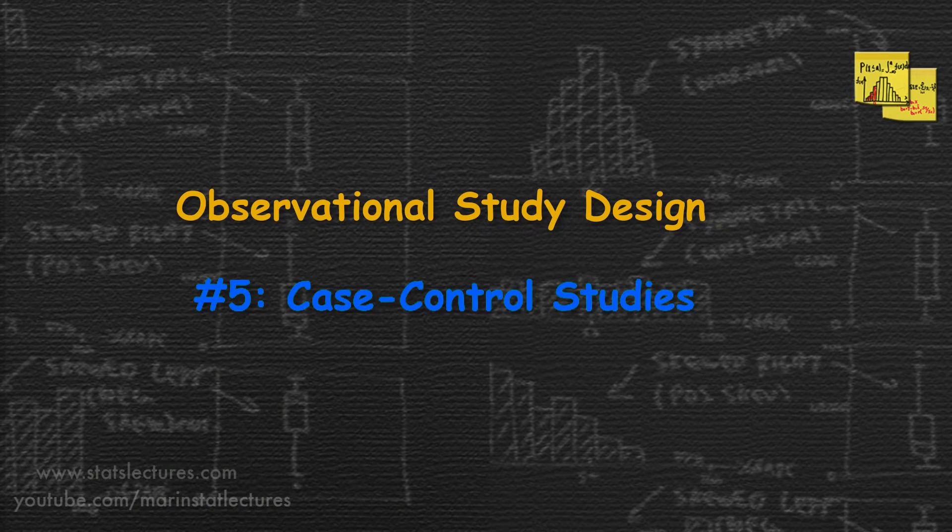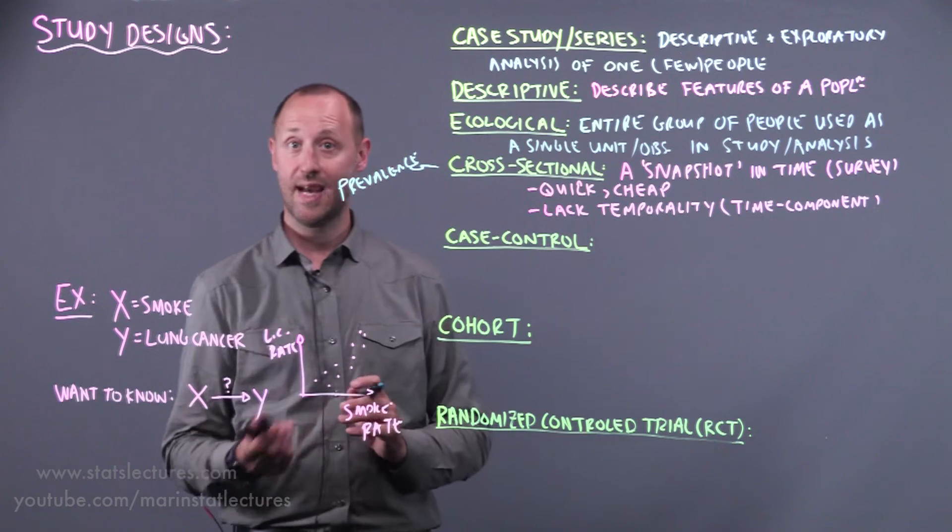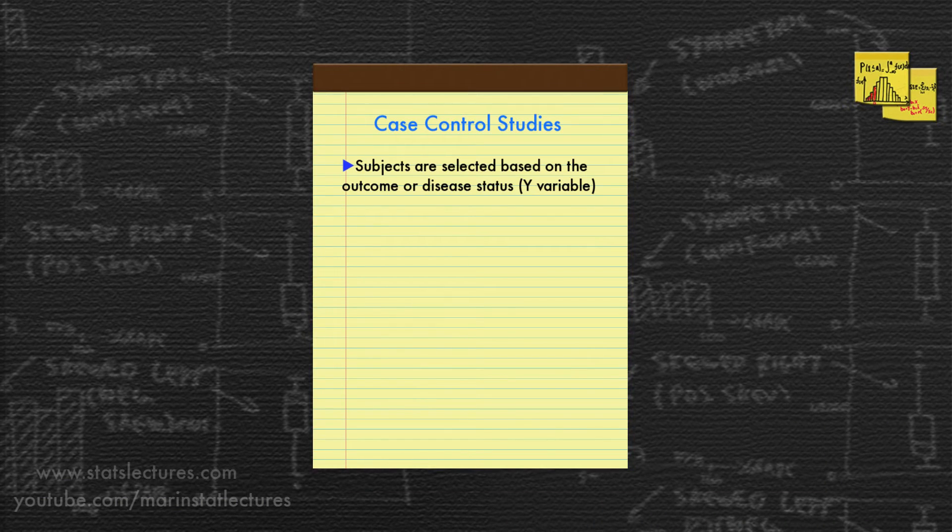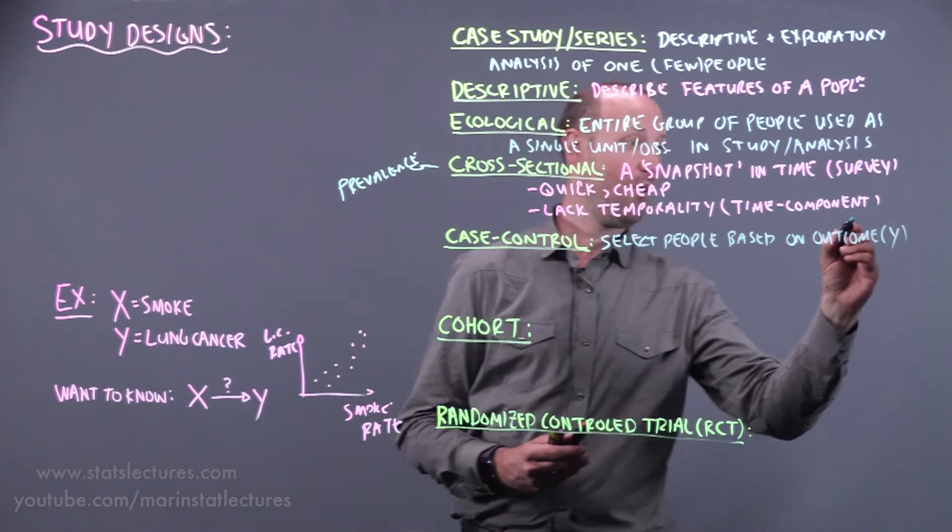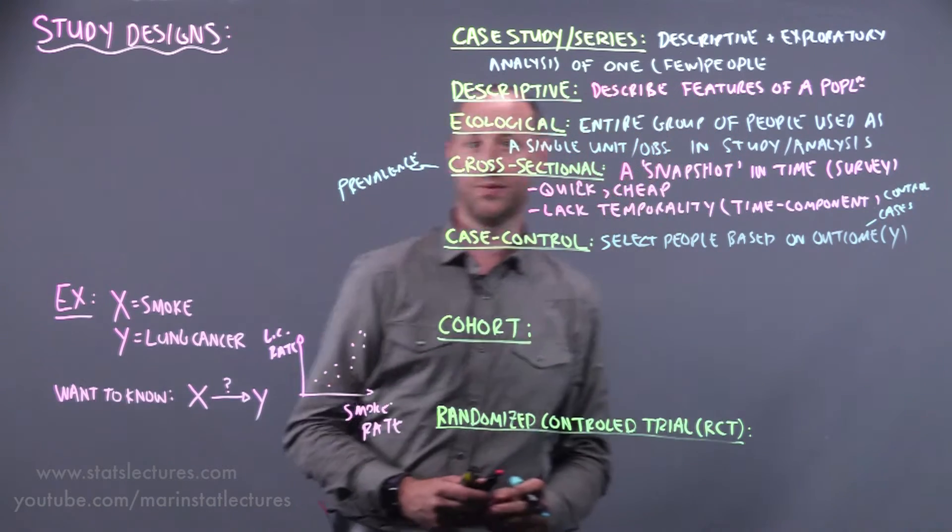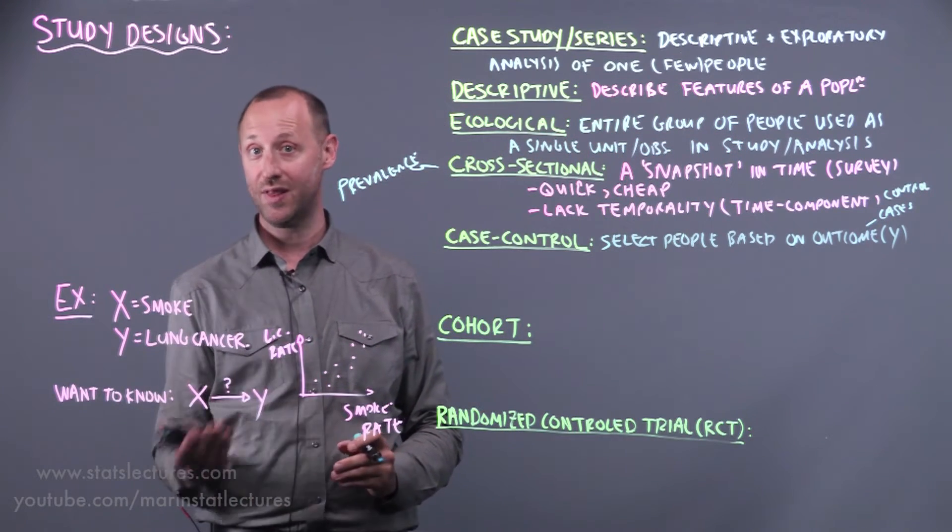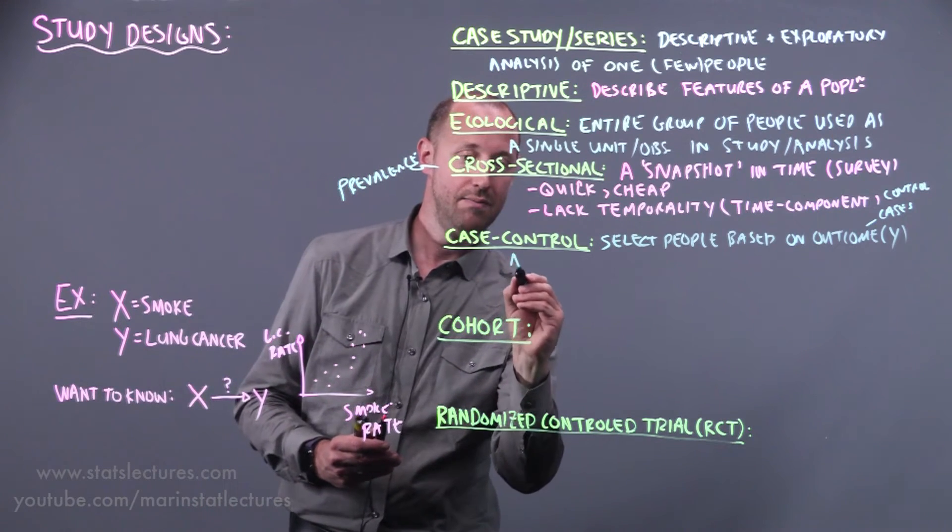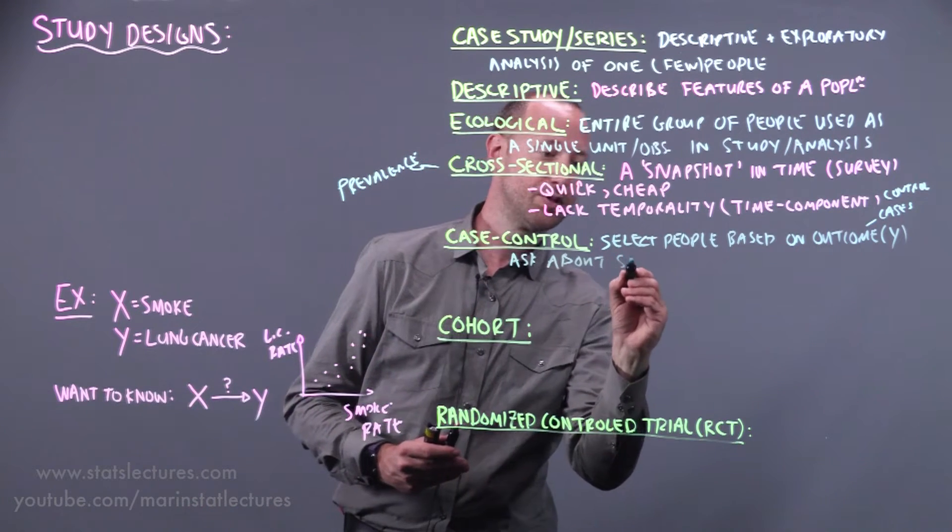Case control designs: what these are is we select cases and we select controls. In other words, we select people based on the outcome or the y variable. We select people in this example with lung cancer, we select people without lung cancer, and then we ask about their smoking habits.